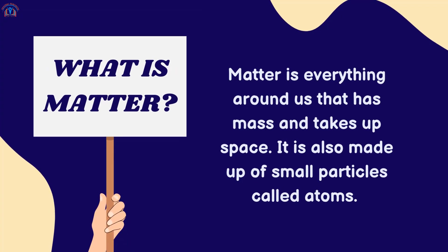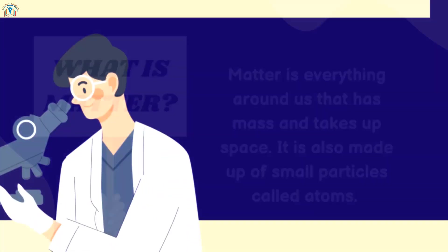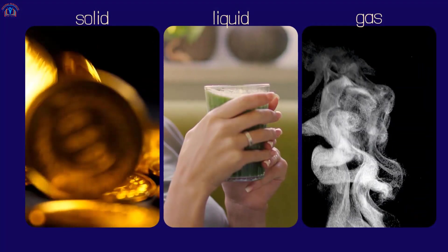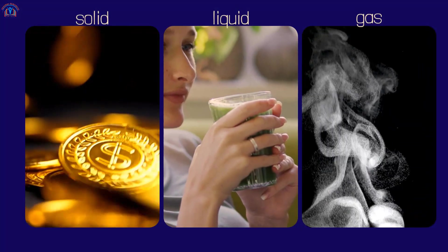What is matter? Matter is everything around us that has mass and takes up space. It is also made up of small particles called atoms. There are three states of matter: solid, liquid, and gas. Here are a few examples of matter you see in daily life.